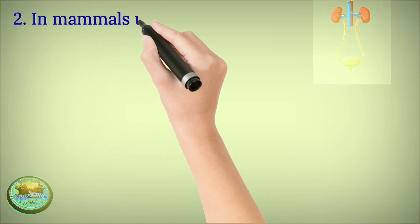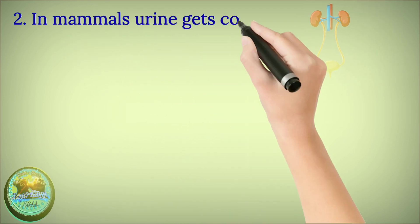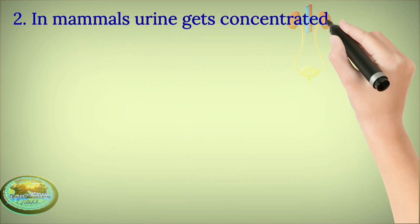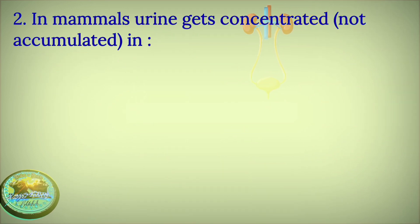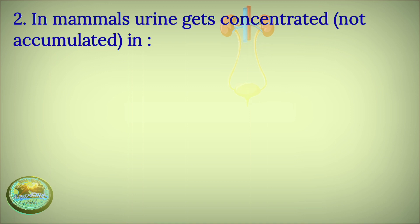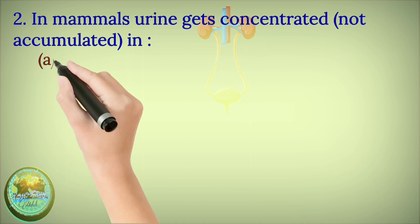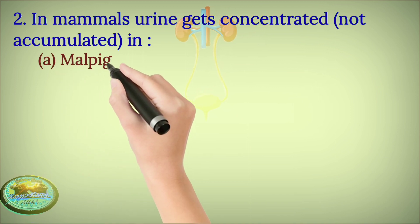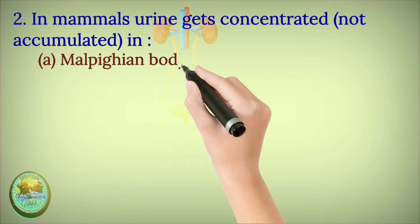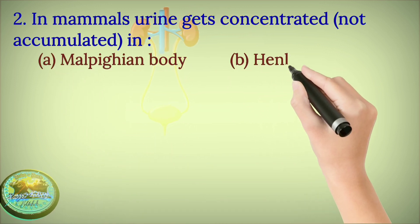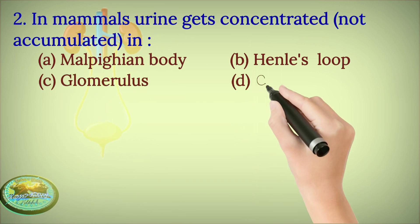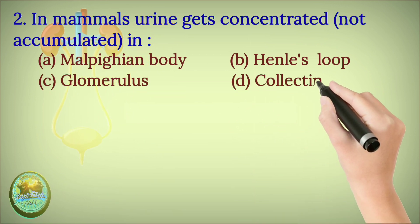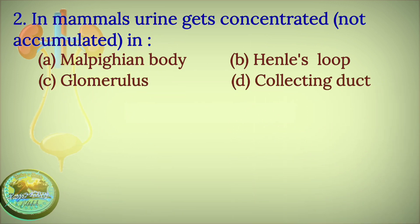Question 2: In mammals, urine gets concentrated, not accumulated, in — Malpighian body, Henle's loop, glomerulus, or collecting ducts?